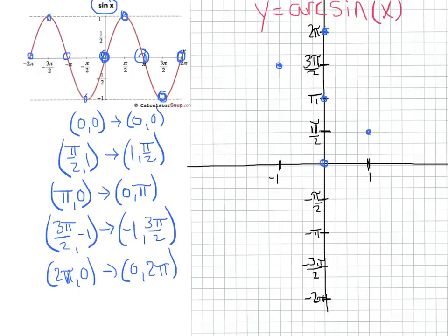Working backwards in the negative direction: (−π/2, −1) has inverse (−1, −π/2); (−π, 0) has inverse (0, −π); (−3π/2, 1) has inverse (1, −3π/2). Now we're going to connect those points with a smooth curve — and that's what our arc sine or inverse sine graph looks like.